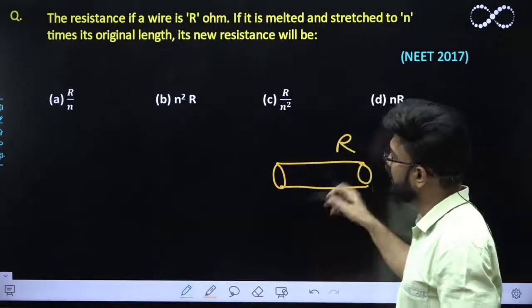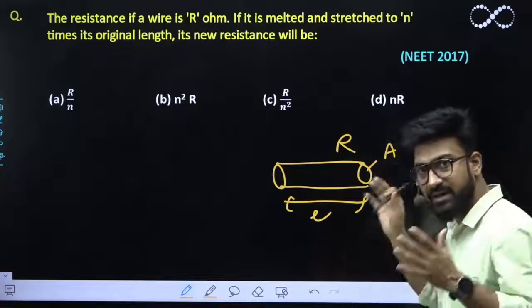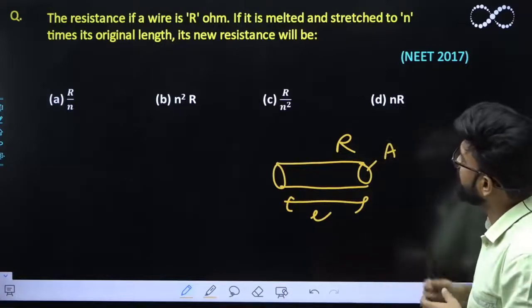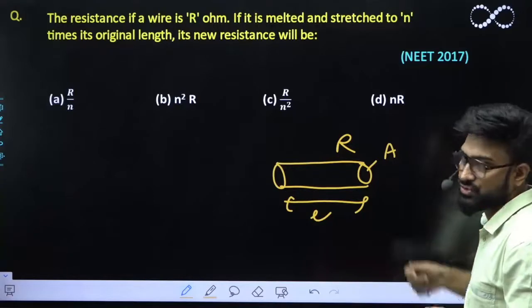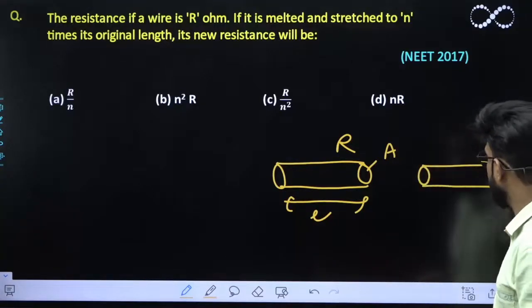So you have been given a wire whose resistance is R. Let its length be l and area of cross section be a. Now if it is melted and stretched to n times its original length, its new length becomes nl.